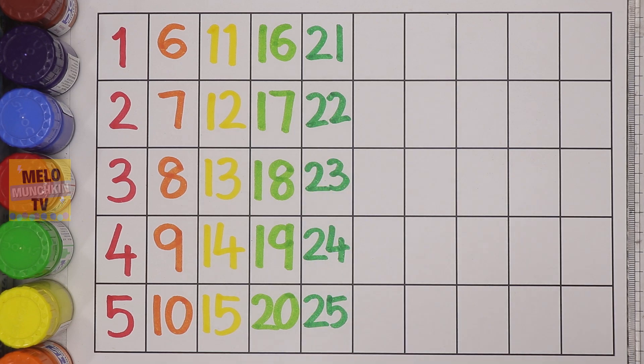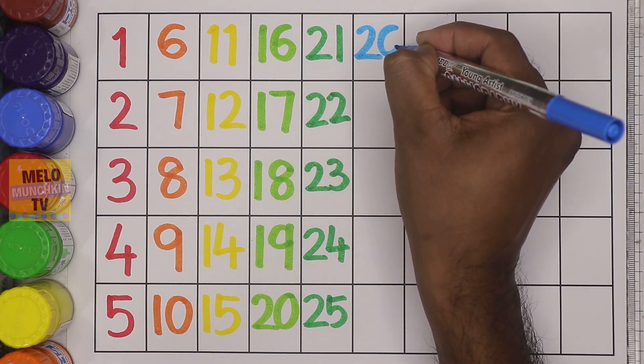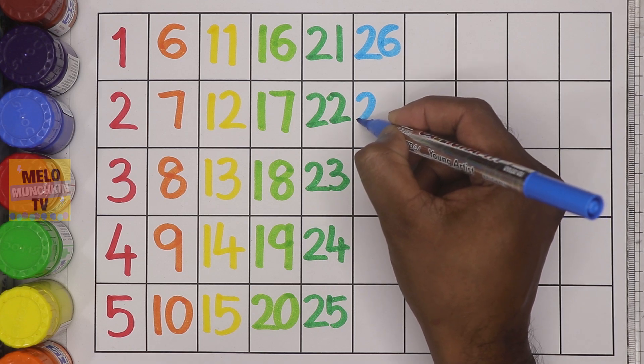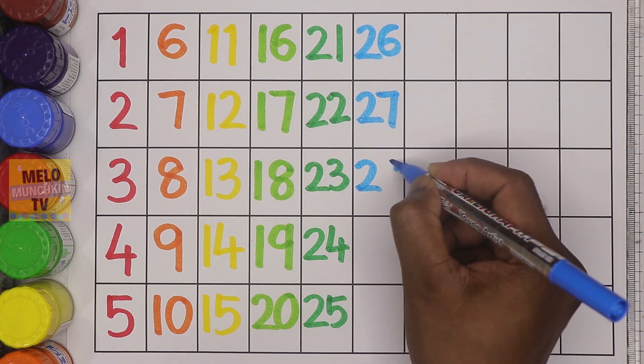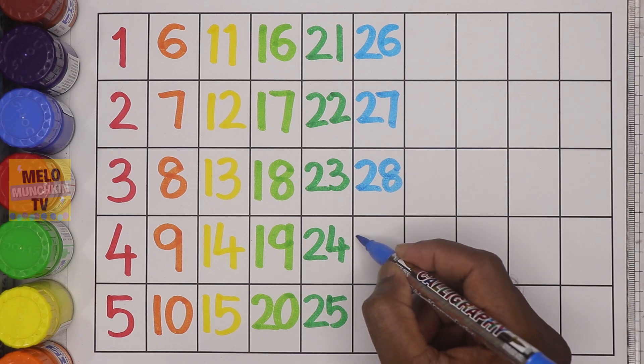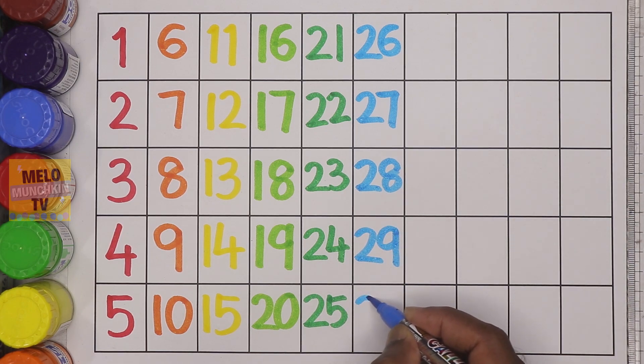Light blue color. So after twenty-five it is twenty-six, twenty-seven, twenty-eight, twenty-nine, thirty